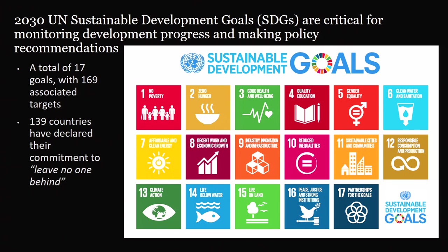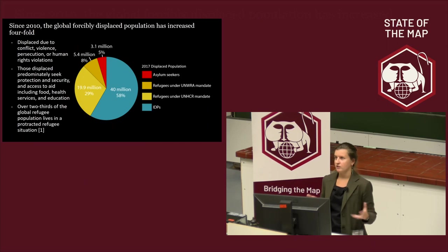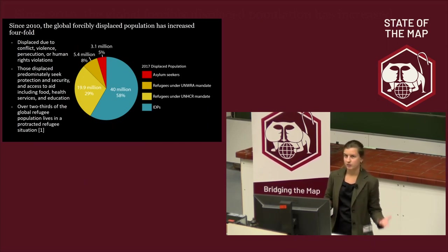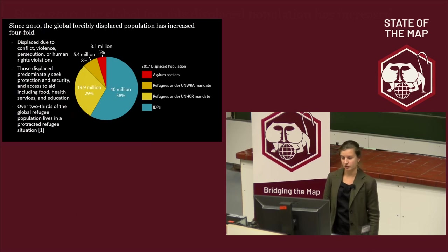139 countries have declared their commitment in 2015 to leave no one behind, and oftentimes that is a really loaded statement. The people most likely to be left behind in these SDG goals are people who have been forcibly displaced from their homes. This includes refugees, internally displaced people (IDPs), and asylum seekers — over 70 million people in total. They're often displaced due to armed conflict events, gender-based violence, persecution, and human rights violations, and they're seeking basic services like food, healthcare, and opportunities in education and potential jobs.